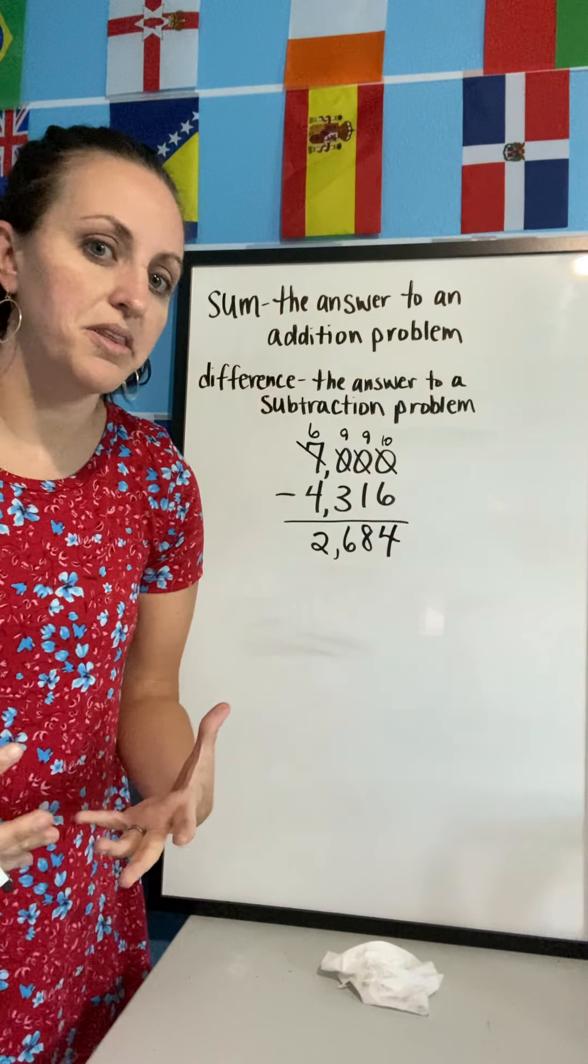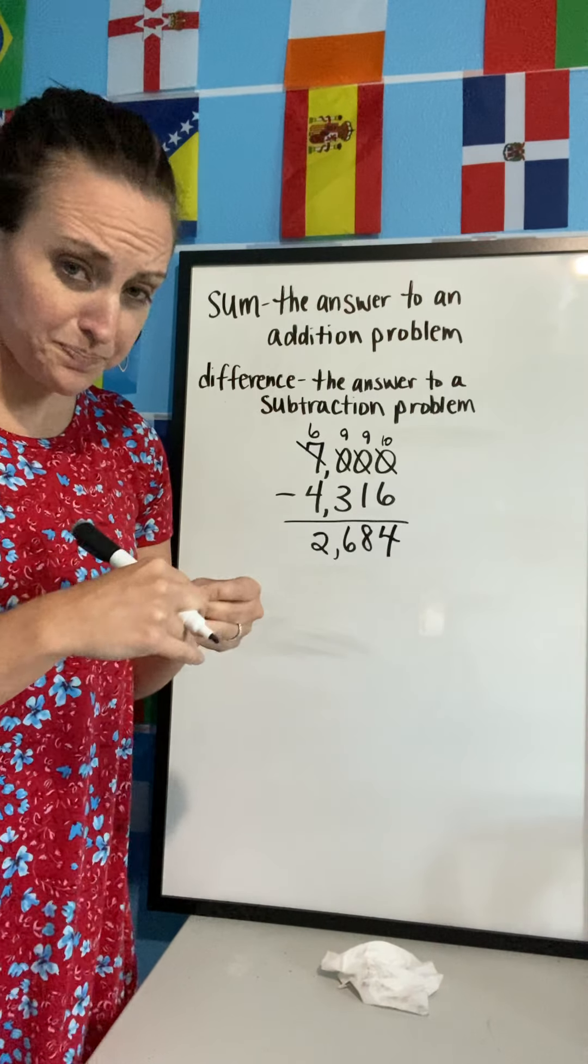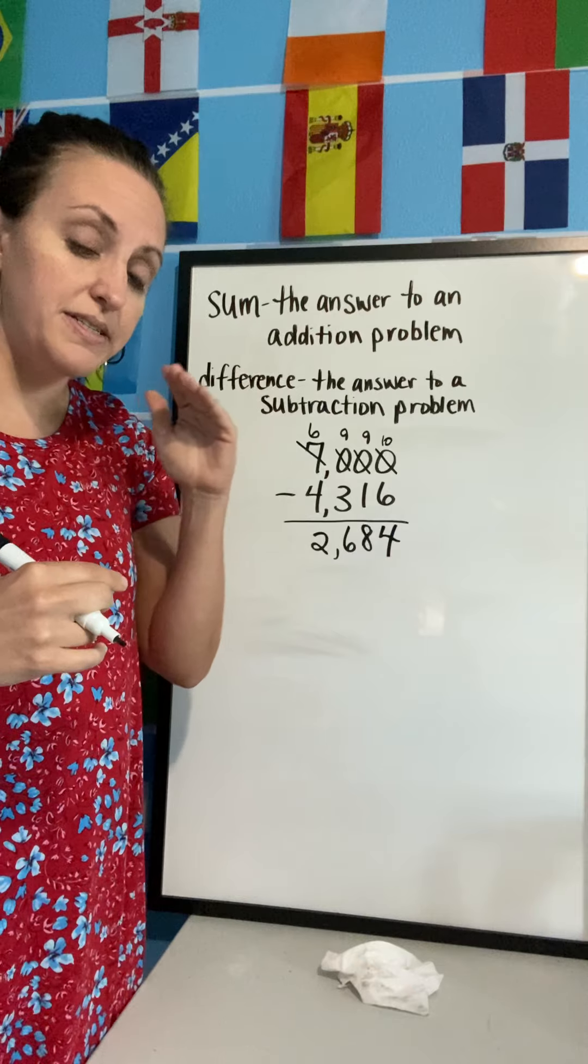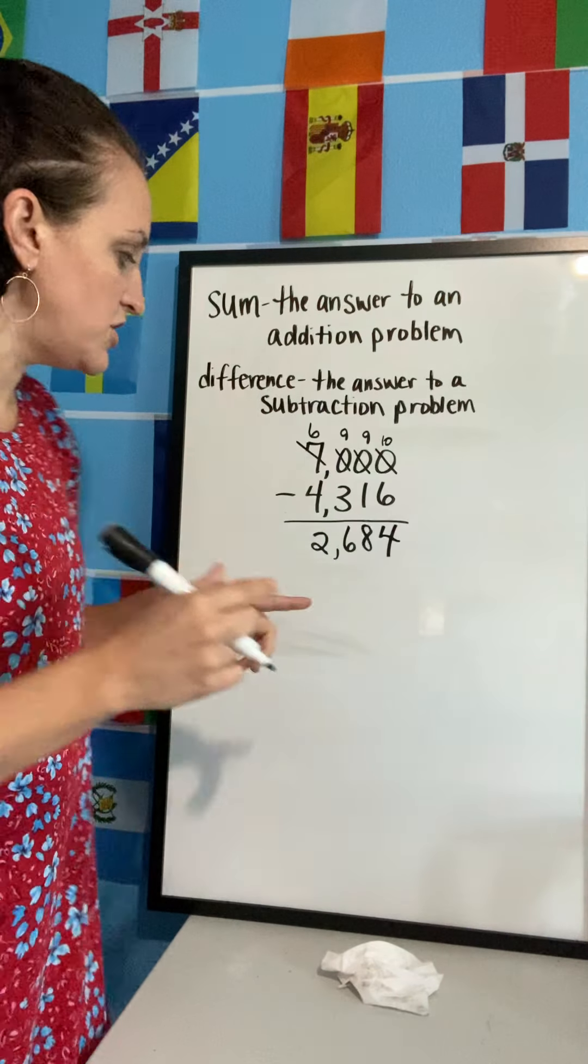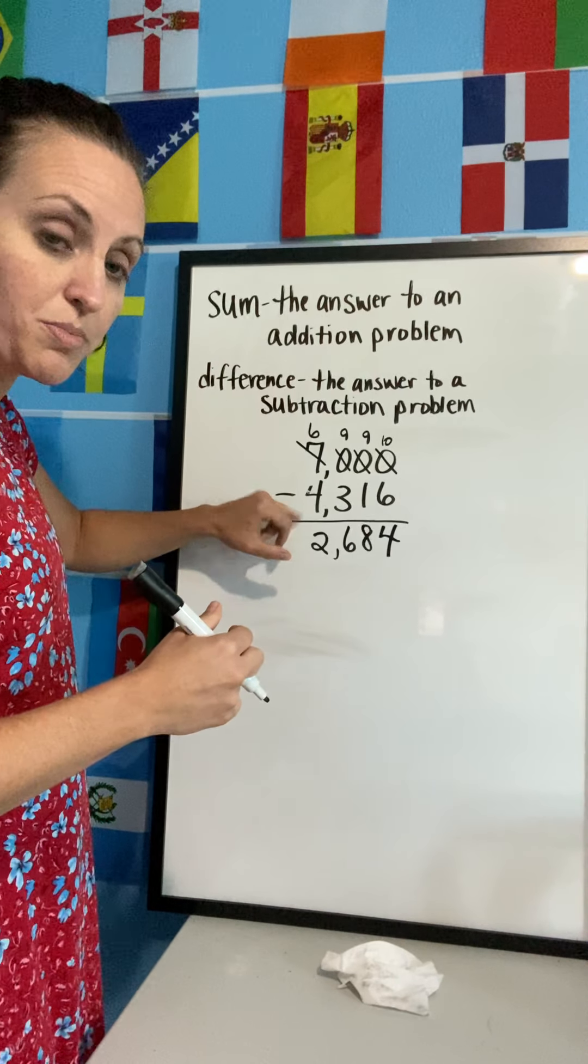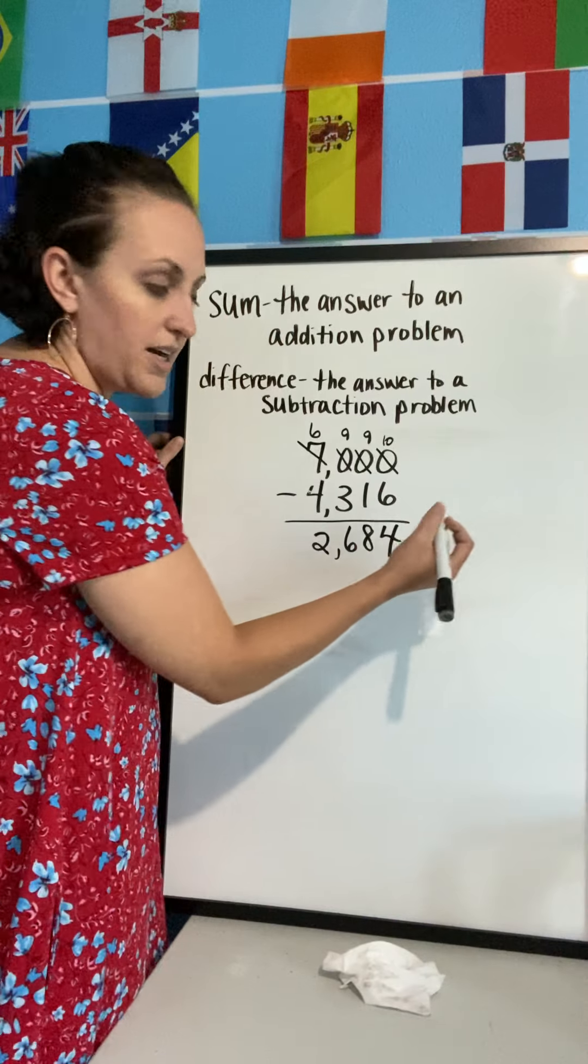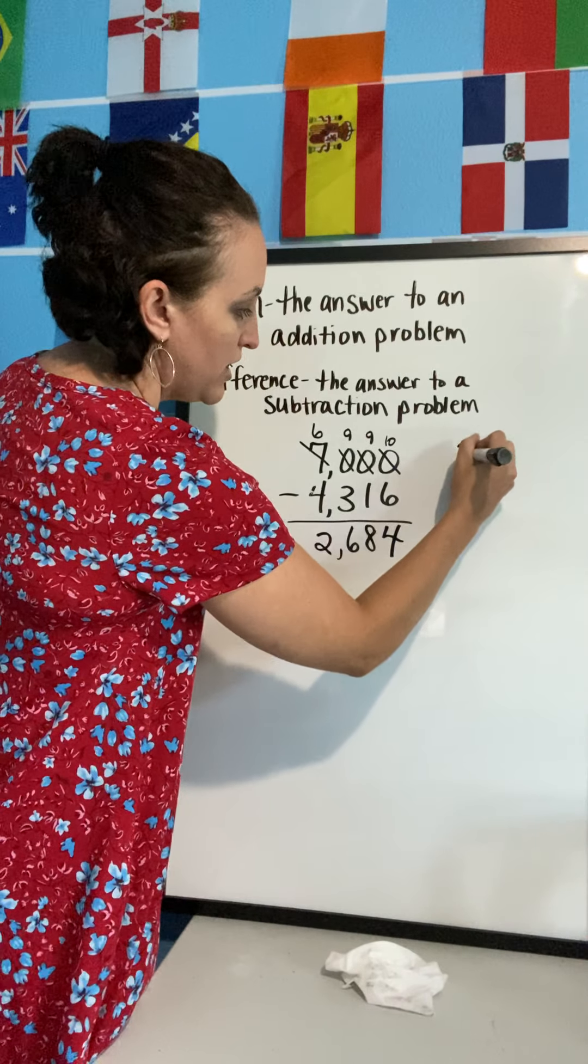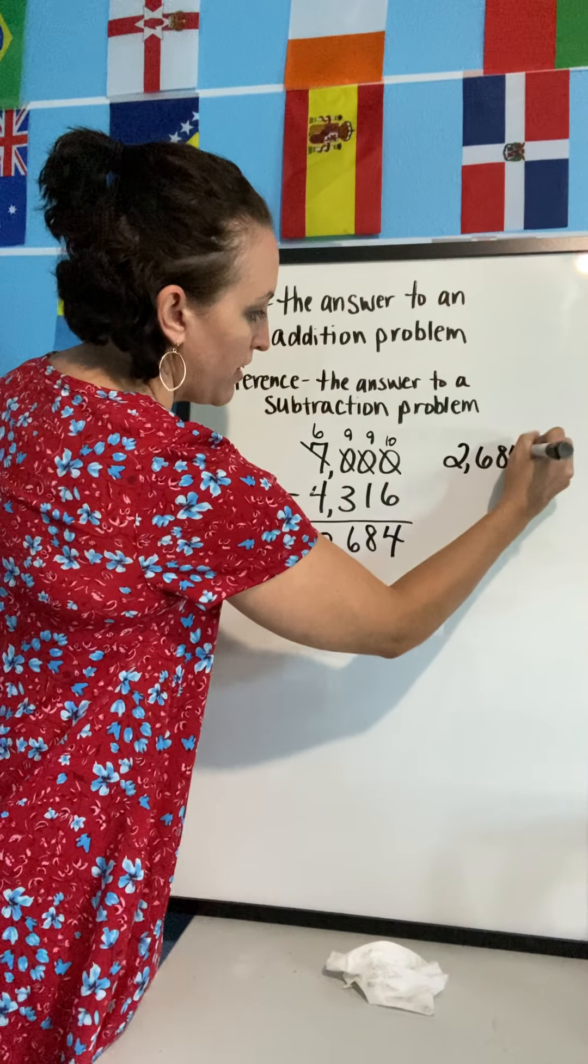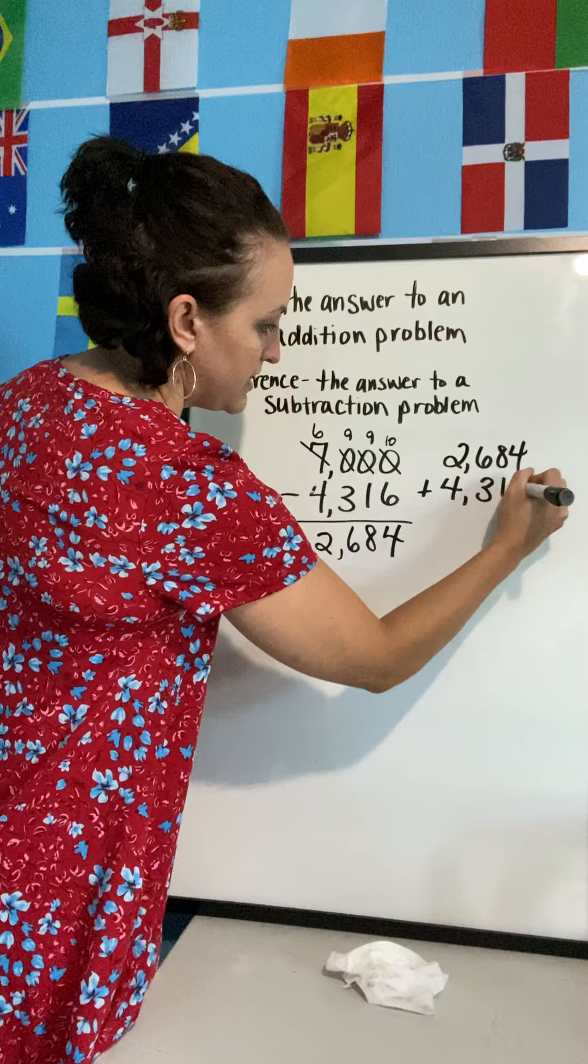If I want to check and make sure that my subtraction is correct, I can do what's called the inverse operation. Inverse means opposite, the opposite operation. The opposite of subtraction is addition, so if I take these two numbers, my difference plus the bottom number of my subtraction problem, and I add them together, I should get seven thousand. It's always a great idea to check our work. So let's do that: two thousand six hundred eighty four plus four thousand three hundred sixteen.